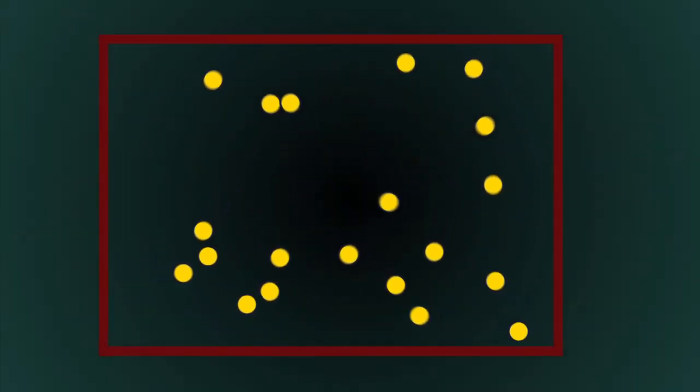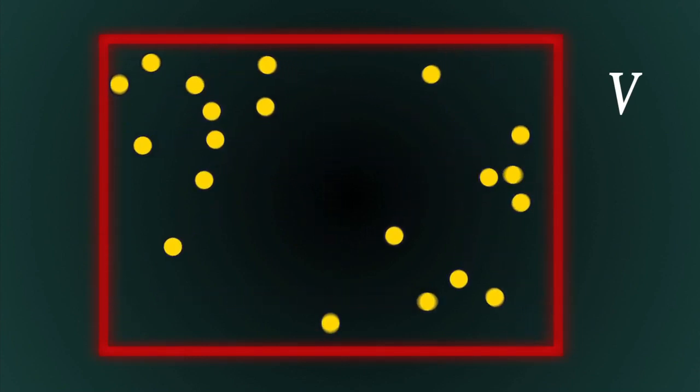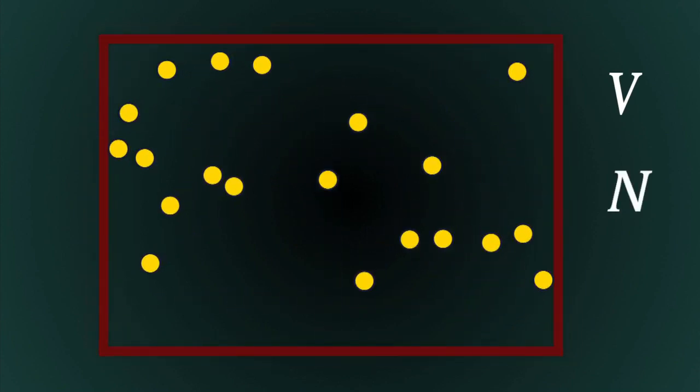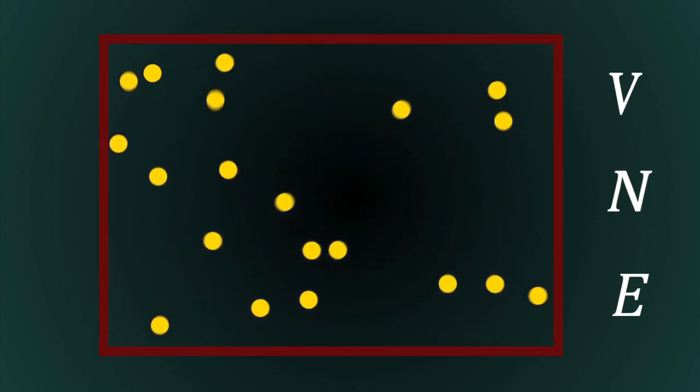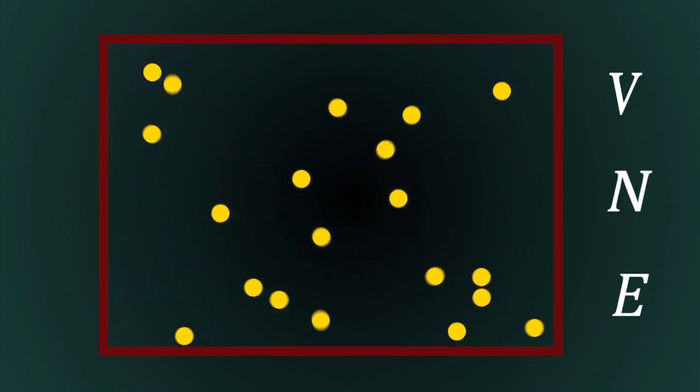Consider an isolated, insulated box of non-interacting particles. We can characterize this box macroscopically by three parameters: the volume of the box, the number of particles in the box measured in moles, and the total energy. The volume of the box, the number of particles, and the total energy in this box are fixed.